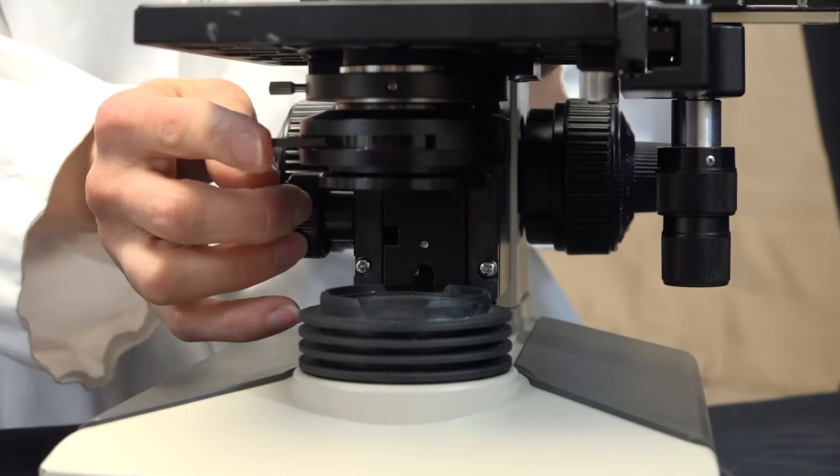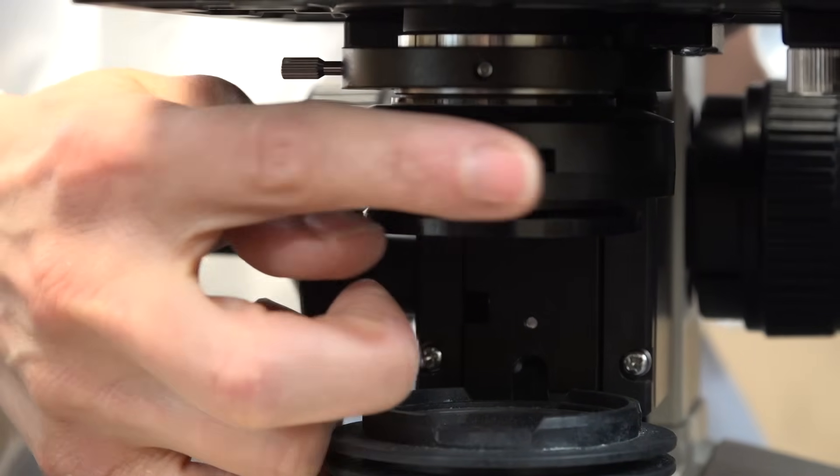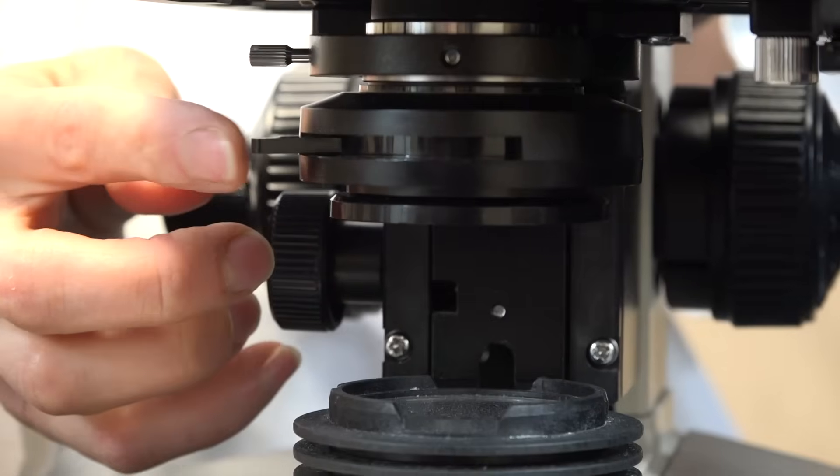On the condenser there's also a small lever. This is the iris diaphragm lever and it controls the amount of light that passes through the condenser.